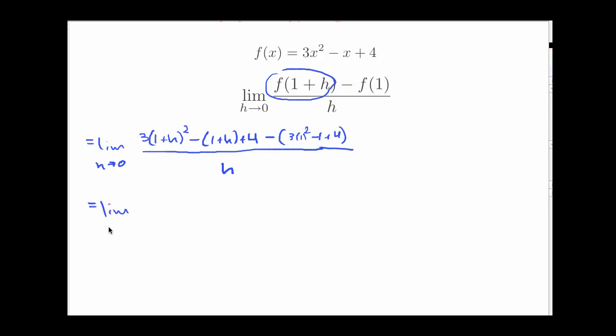Now we're going to continue here and try to simplify the top as much as we can. Lots of algebra about to happen here. I'm going to use the FOIL method to expand (1+h)², so that's 1 + 2h + h². I'm subtracting a group in the second bit here so I'm going to subtract 1 and subtract the h, adding 4.